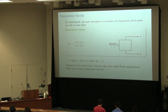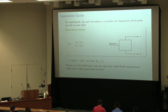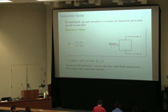What does a separation factor of exactly one mean? It means you've perfectly split the stream and done nothing — whatever is coming in is leaving again. So S_IJ equal to one is the worst type of separator. That gives us two bounds: one is our really poor separator, and infinity is the best separator possible.